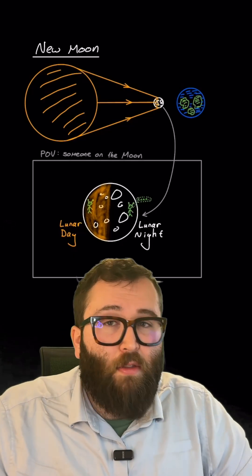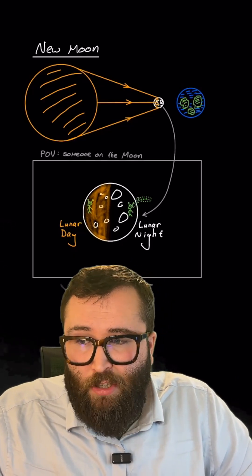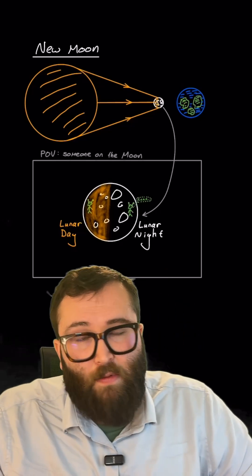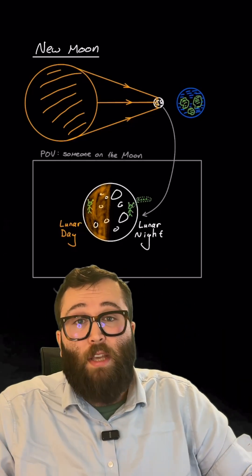If you're one of these moon people living on the surface of the moon, then actually you experience half the time as night and half the time as day, just like somebody living on the earth.